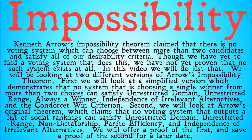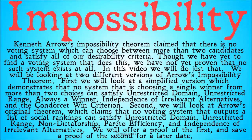Kenneth Arrow's Impossibility Theorem claimed that there is no voting system which can choose between more than two candidates and satisfy all of our desirability criteria. Though we have yet to find a voting system that does this, we have not proven that no such system ever will — that there's no system in existence that can satisfy all of our desirability criteria for more than two candidates.